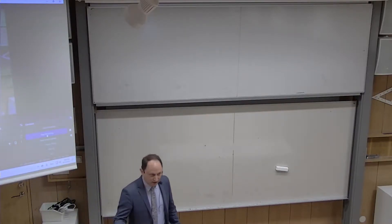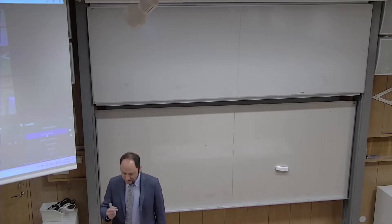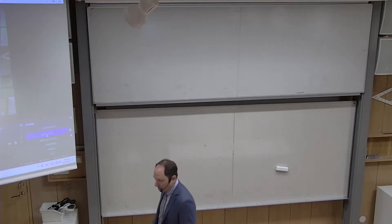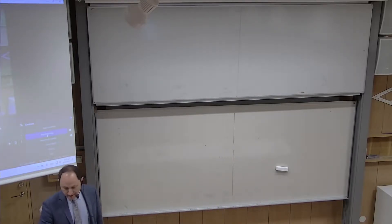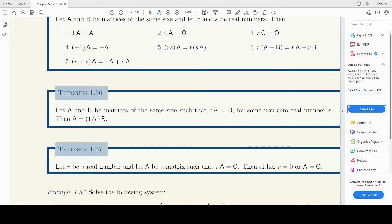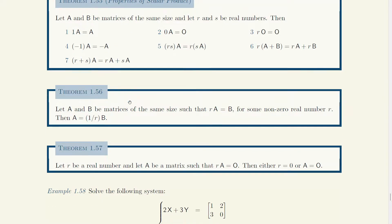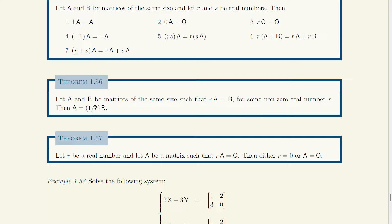Good morning. Let me teach a little bit so that we can complete that part and also test this new setup that everything is working fine. So if you remember, we had this theorem last time — we learned what are the properties of scalar multiplication, meaning multiplying a number by a matrix. There are very simple facts that are left that I want to address.